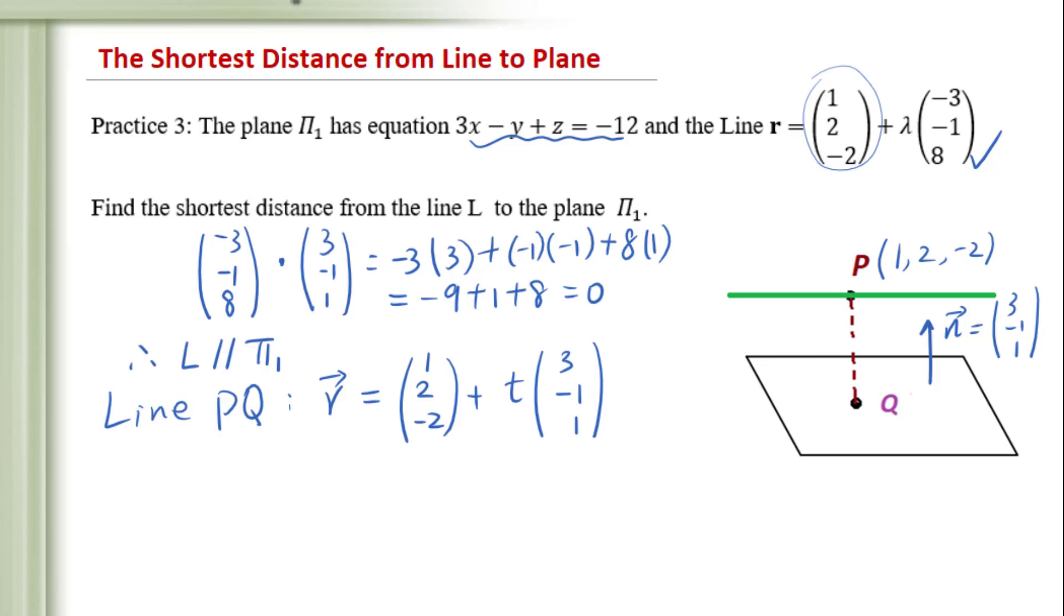The parametric form of the equation of the line PQ: x equals 1 plus 3t, y equals 2 minus t, z equals -2 plus t.